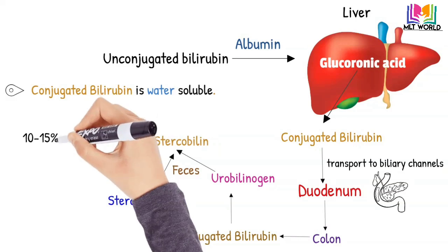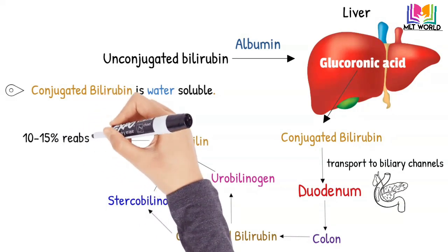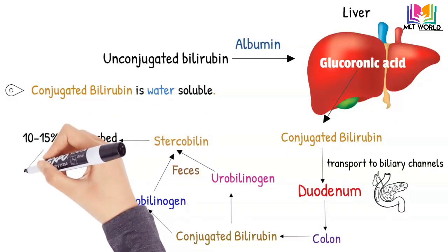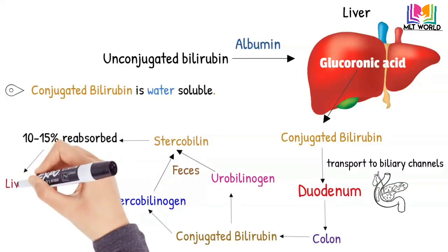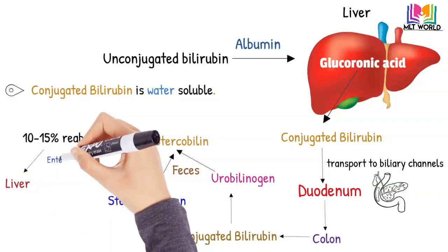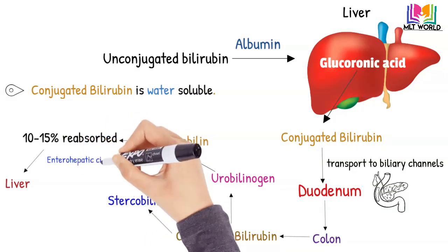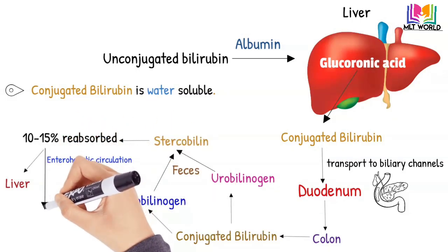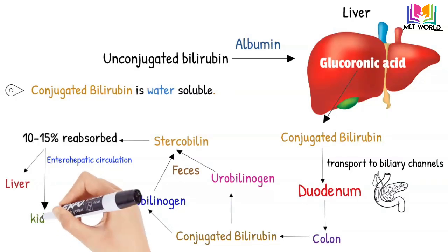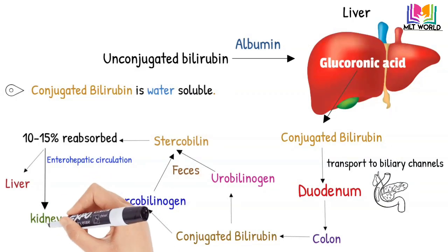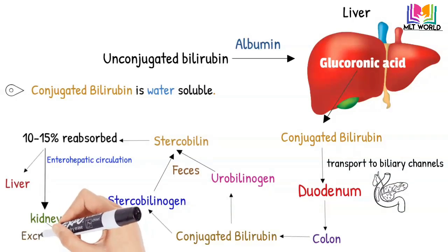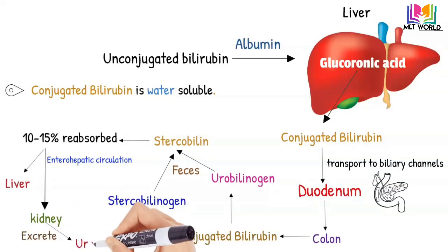About 10 to 15 percent of these compounds are reabsorbed into the blood. Some percentage reaches back to the liver — this circulation is called enterohepatic circulation. The remaining percentage reaches the kidneys and is excreted in the urine in the form of urobilin. This is how bilirubin metabolism takes place — this is the cycle of bilirubin metabolism.